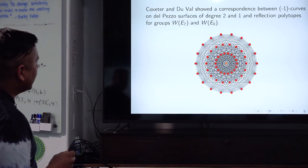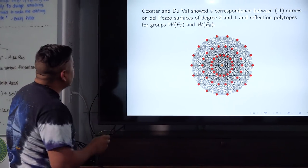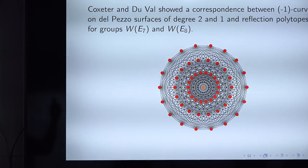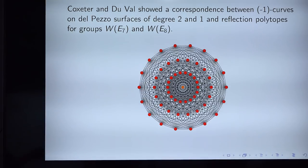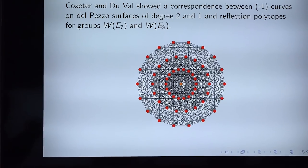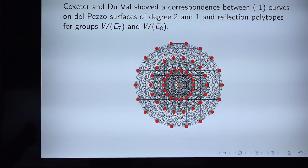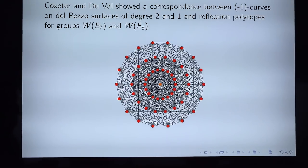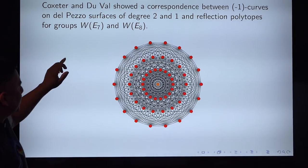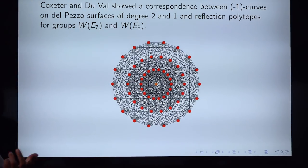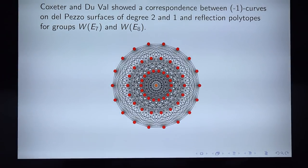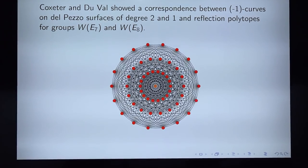Coxeter and DuVal showed a correspondence between the minus-one curves on del Pezzo surfaces of degree two and one, and reflection polytopes for the Weyl groups of E7 and E8. These curves are essentially spheres — lines that are really spheres — and there's a correspondence between those and the polytopes associated with E7 and E8, which many of you have already explored computationally.